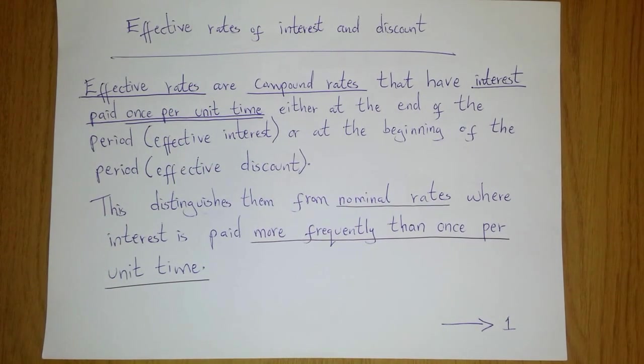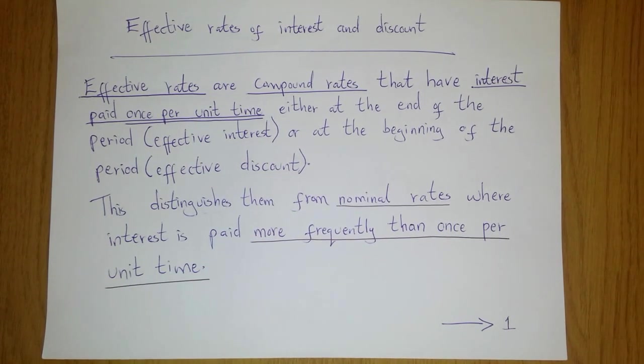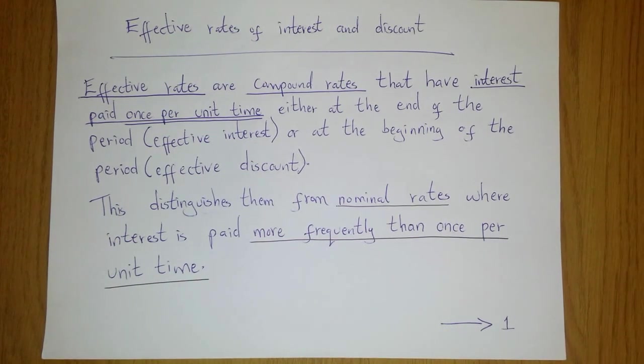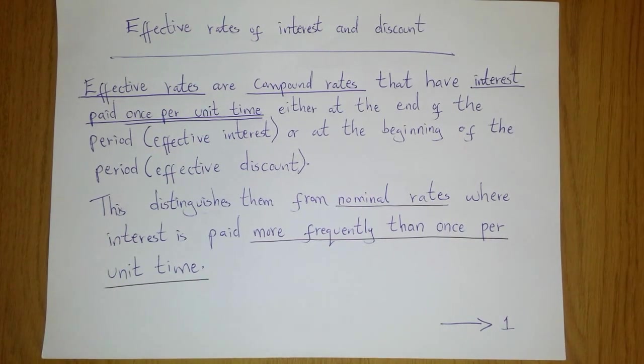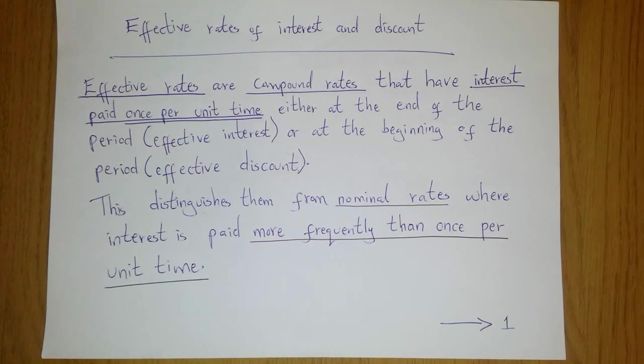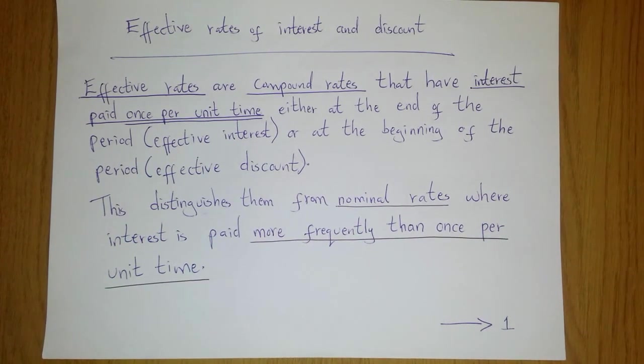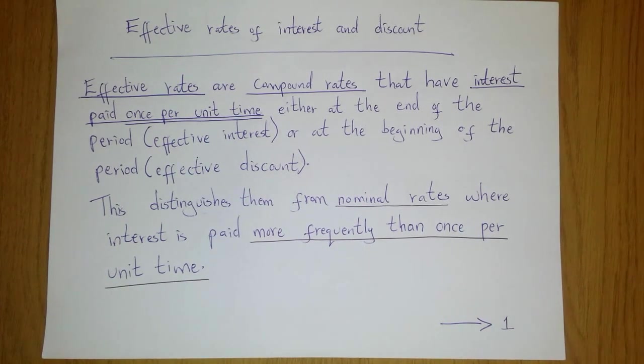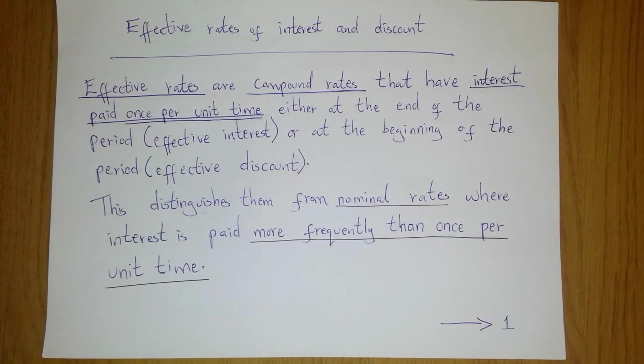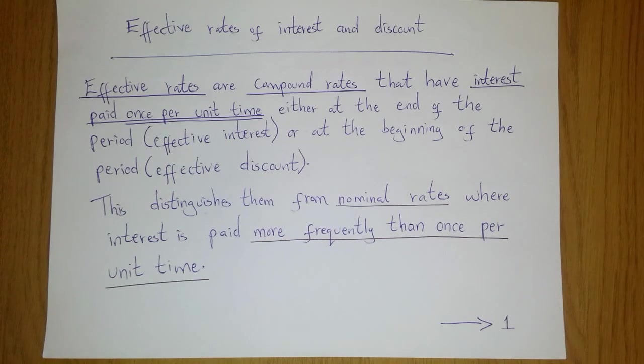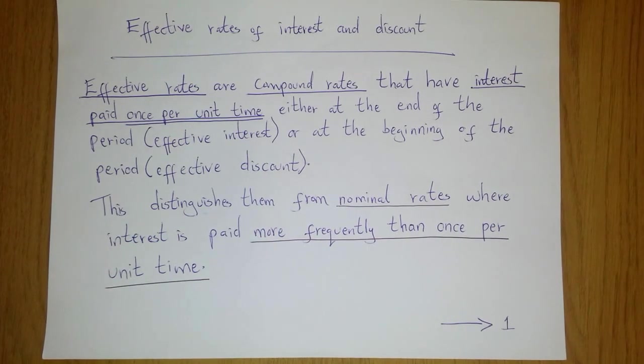This distinguishes them from nominal rates where interest is paid more frequently than once per unit time. In the case of nominal rates you could have your interest paid every month, that is 12 times per year, or you could have it paid twice a year, maybe halfway through the year and then at the end of the year. So all you have to do is remember this difference between effective rates and nominal rates for now.